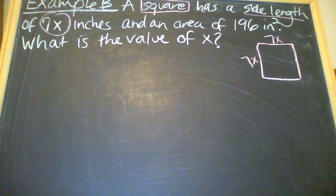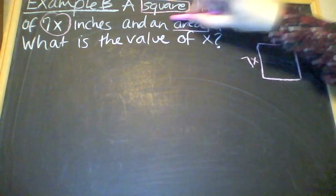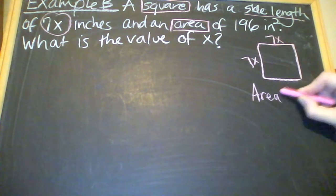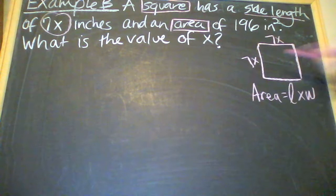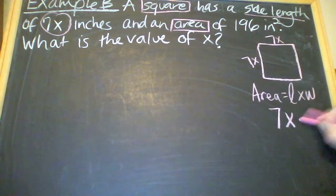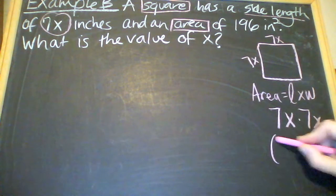Then I'm going to think to myself, how do you find the area of a square? Because we're talking about area here. Area of a square is length times width. So you're going to take 7x and multiply by 7x. Another way to write 7x times 7x is 7x to the second power.